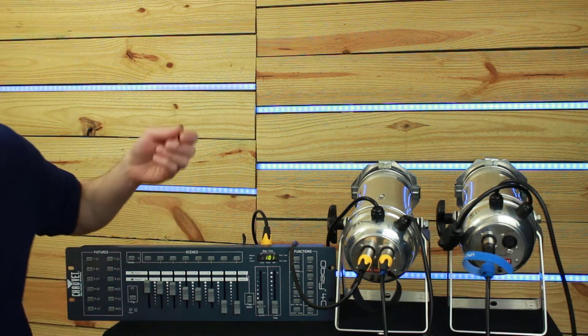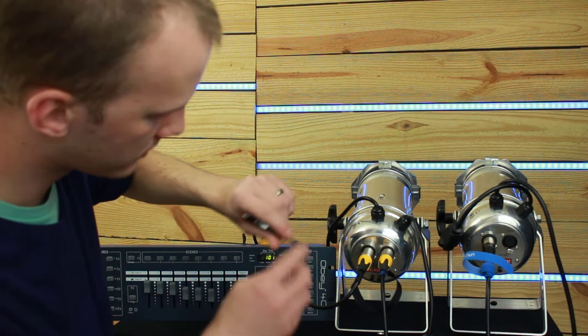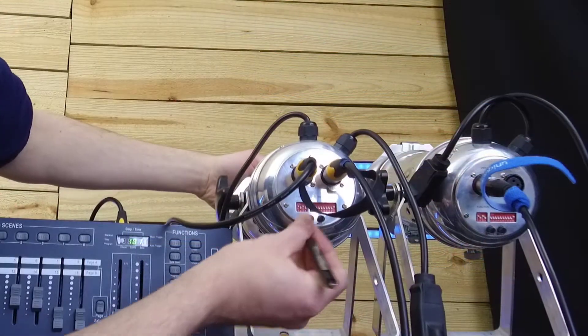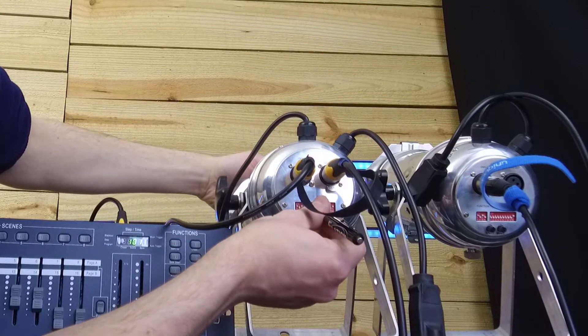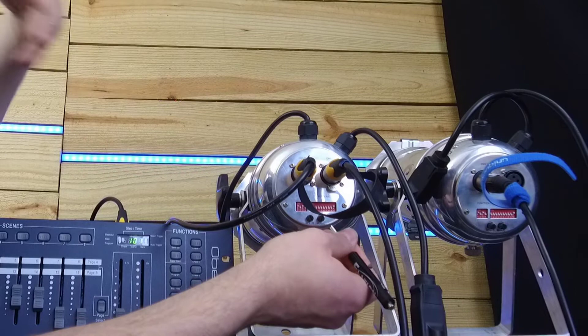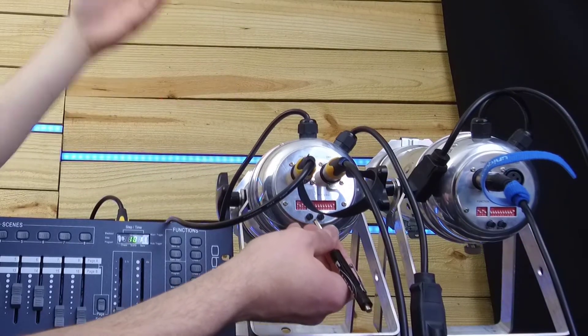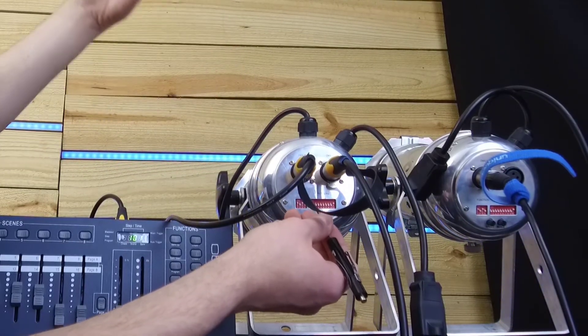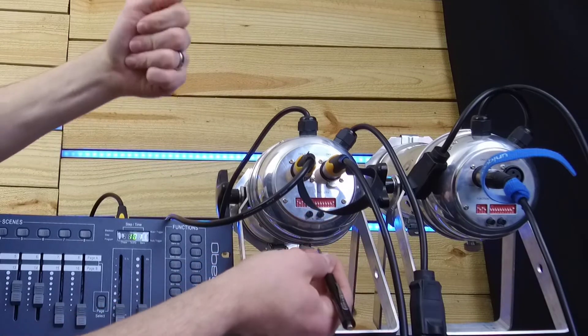So to address these, I'm just going to walk over here. On this first fixture, I'm just going to take the first switch and put it in the on position and leave the rest of the 9 dip switches off. Now this particular fixture has a 10th dip switch. The 10th dip switch puts it into DMX mode.